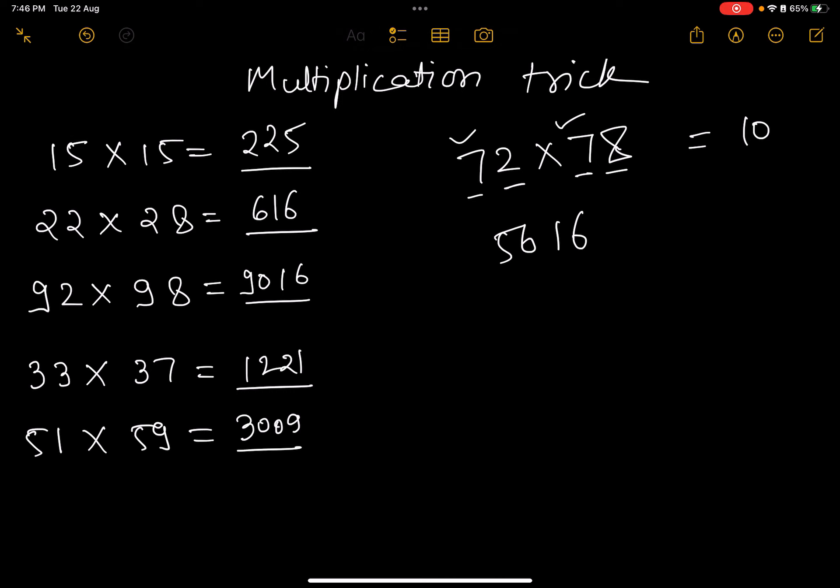Another example: 83×87. First condition - the sum should be 10 for the last digits, which is 3+7 equals 10, that's right. The digits at the tens place should be the same - both are 8, so both conditions work. We can apply the trick: 3×7 equals 21 and 8×9 equals 72, so the answer is 7221.